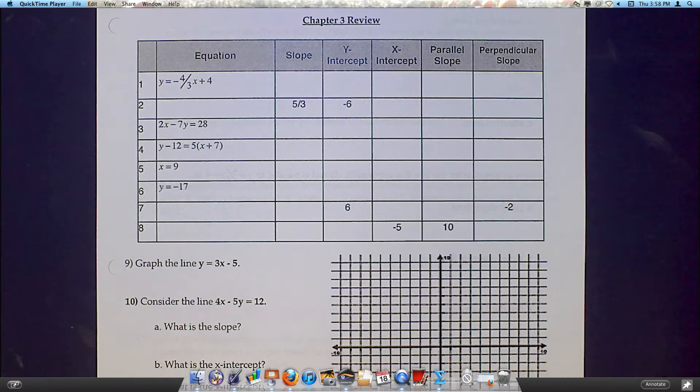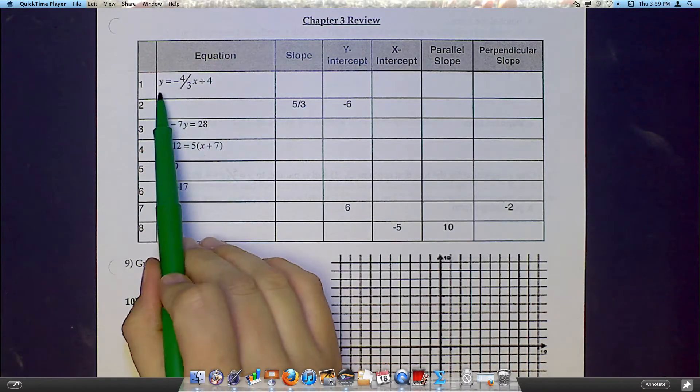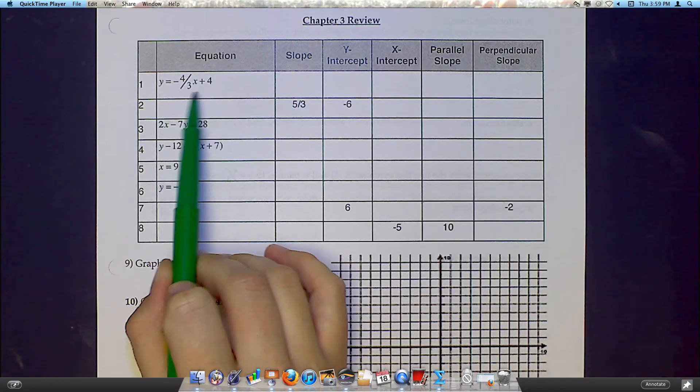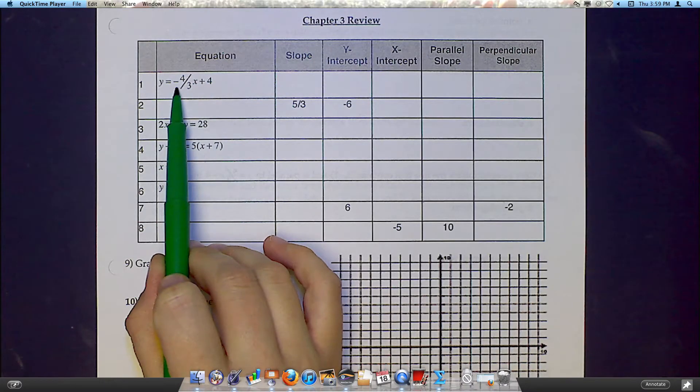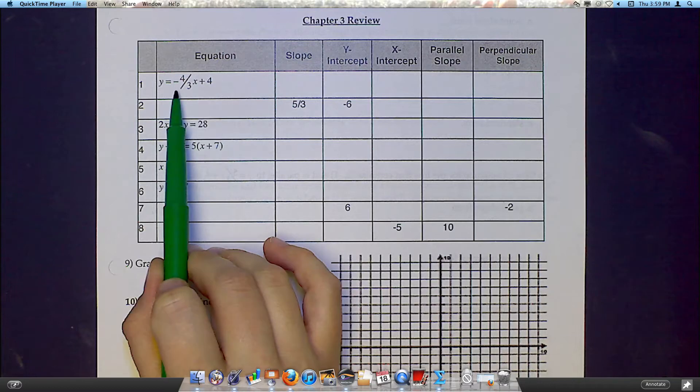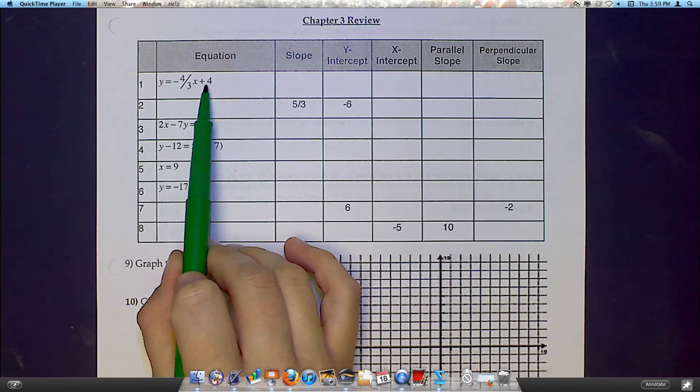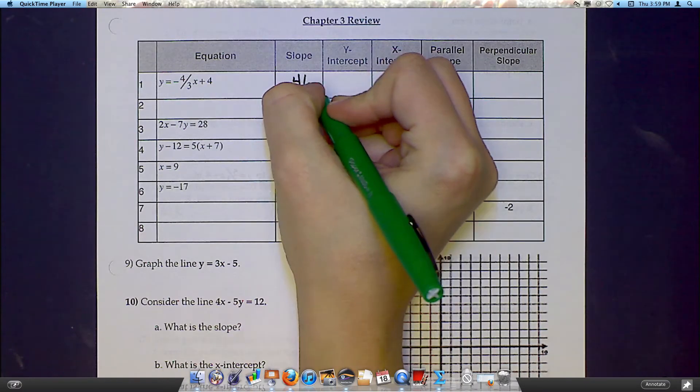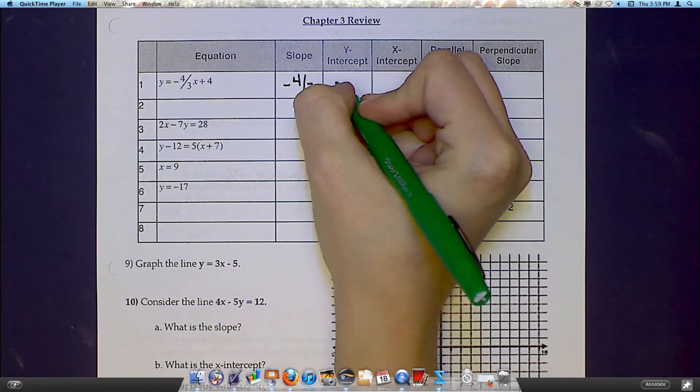We're starting out with one of our favorite tables again. In this first one, I'm given an equation, and my equation is in slope-intercept form. Right away, I can pull the slope and the y-intercept out, because this is m and this is b. So my slope is negative 4 thirds, and my y-intercept is 4.